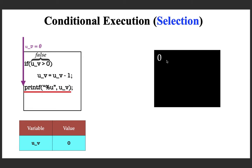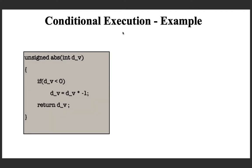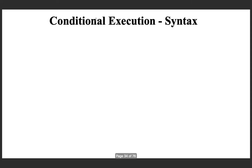Now we can look at another example of conditional execution. Here is a function to find the absolute value of a decimal integer. An integer can be negative or positive, so you check whether the given value is negative. If it is negative, you multiply it with minus 1 to get a positive value. You perform this only when the given number is negative — a simple illustrative example of guarded or conditional execution.